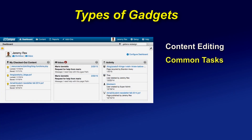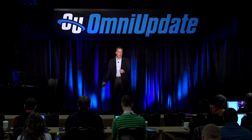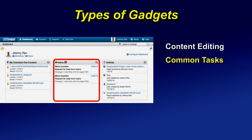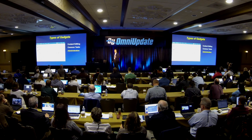There are gadgets designed just for common tasks to make everyday tasks easier. For example, here in the dashboard we've got a gadget called My Checked Out Content — a very common task. I don't have to hunt it down or remember what menu it's in. It's right there in my dashboard. There's also one for my inbox. These gadgets can be moved around and customized to each end user's liking. There are also gadgets specifically designed for administrators — a perfect example being the analytics gadget for site-wide analytics by an administrator.